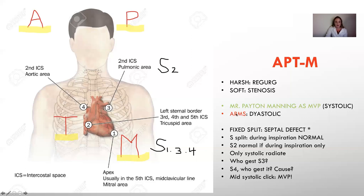AR for aortic regurg and MS for mitral stenosis — again, bad, you die, and that's why they're red. So now you know the location, you know which are okay and systolic, and you know which ones are not okay and diastolic. Remember: Mr. Peyton Manning as MVP has dangerous arms.